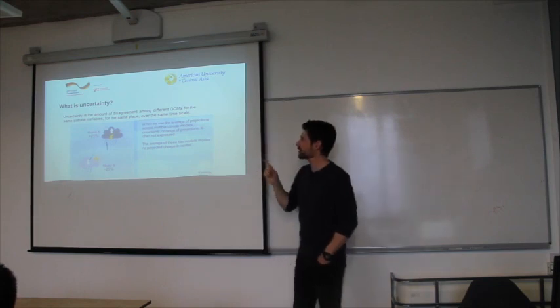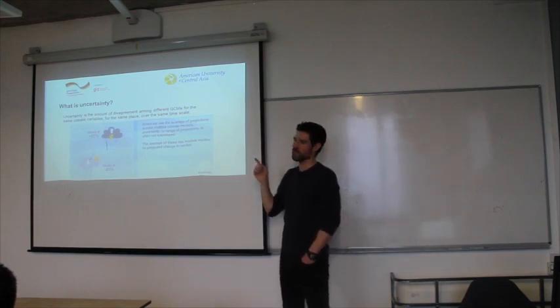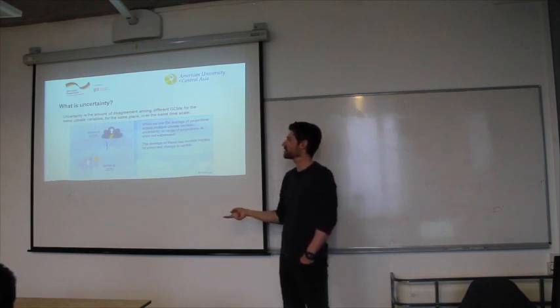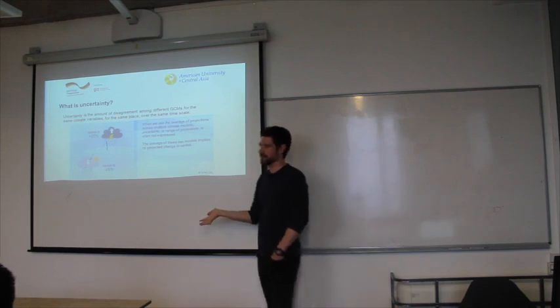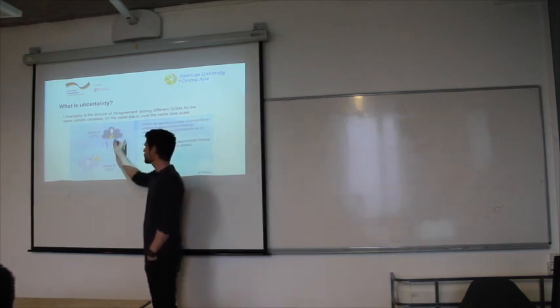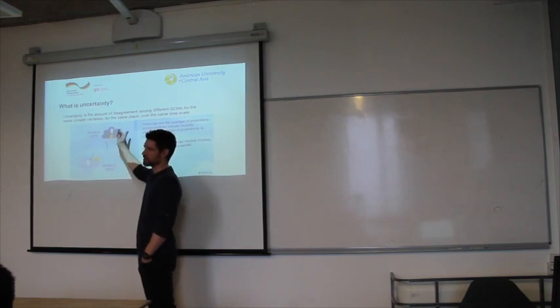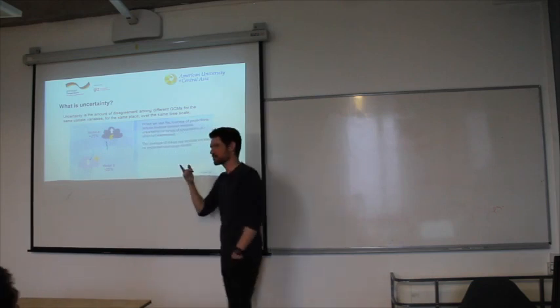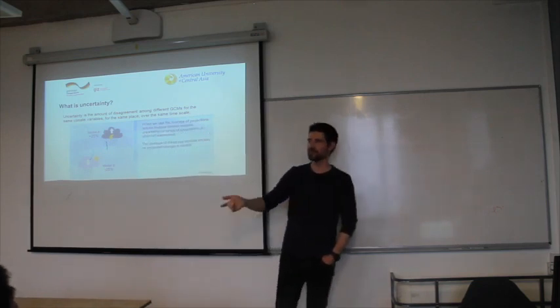So actually, when you would get this projection, and you should use it for planning with your community, preparing them for the future, and you get only the average, you would say, okay, there's no change in precipitation. But actually, there could be this range that, in this region, there could be an increase in precipitation, or there could be even a decrease in precipitation. And this uncertainty, you also have to consider in your planning for the future.